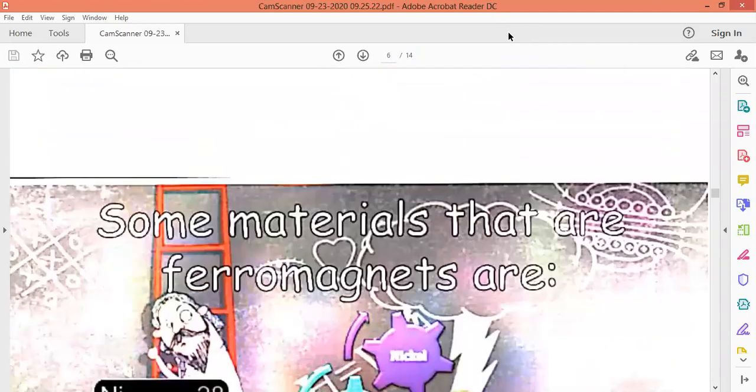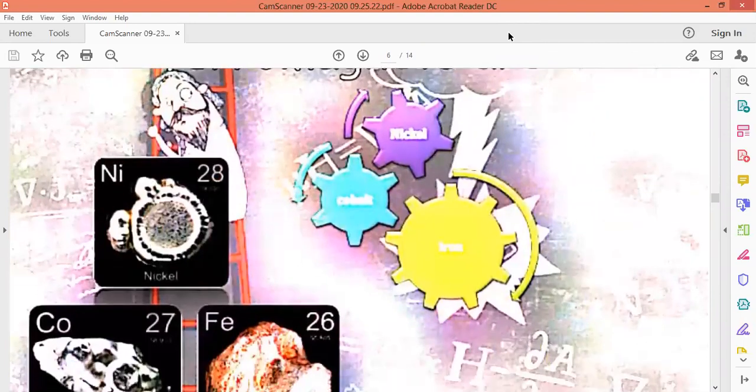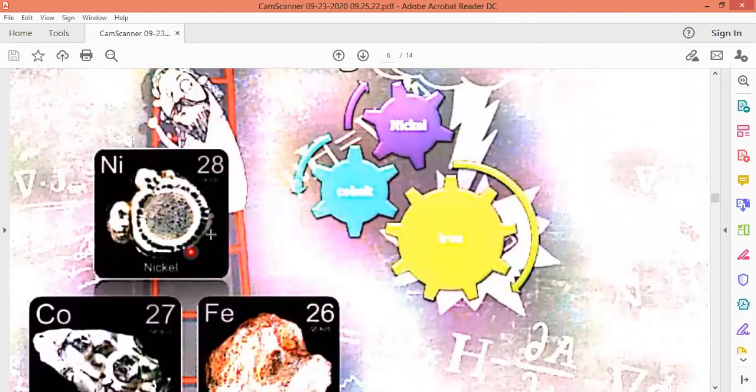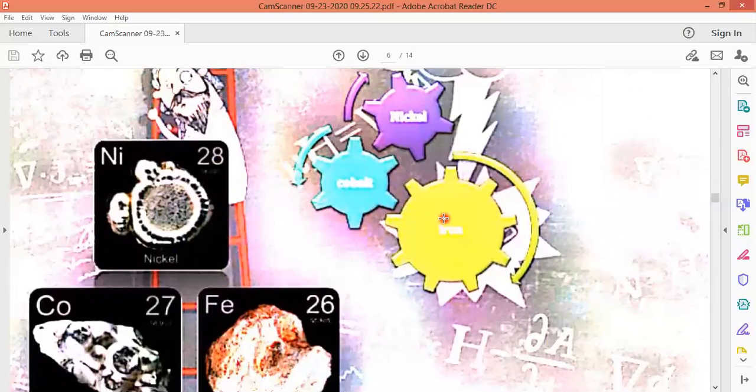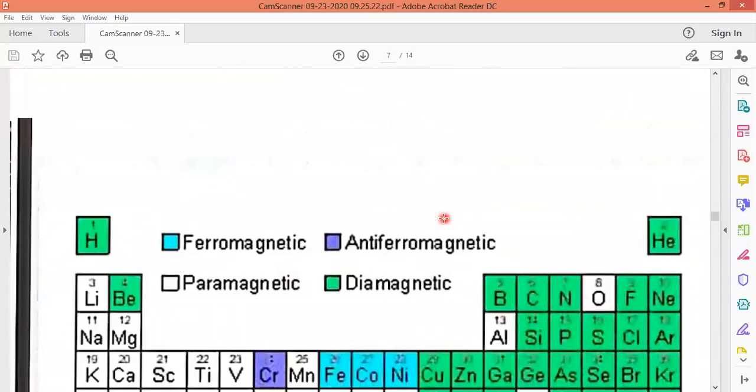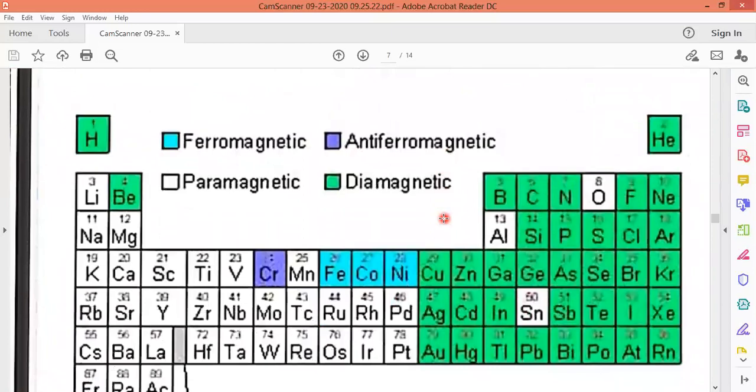Ferromagnetic materials are called nickel, cobalt, and iron. These are the three materials that possess the property of ferromagnetism. So this is our periodic table. These blue color boxes are the materials that possess the property of ferromagnetism, or we can say these are the ferromagnetic materials.